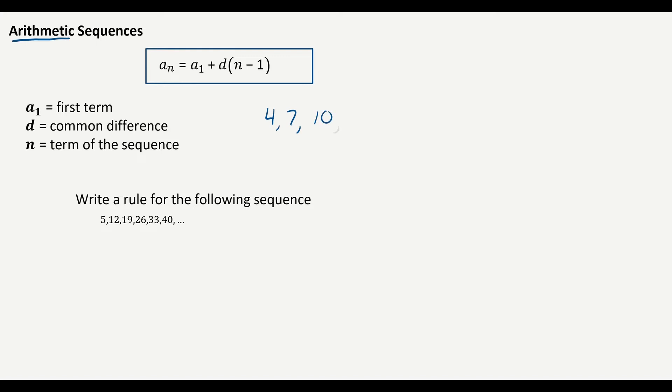Four, seven, ten, thirteen. That would be arithmetic because I'm going plus three, plus three, plus three and so on. So anytime you add or subtract the same number between each term, that is arithmetic.